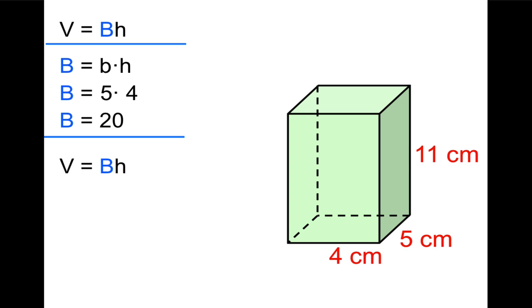Now to find the volume, we're going to plug that 20 in for the big B. And now when we say times h, we mean the height of the prism, which is 11. So we're going to have 20 times 11, 220 centimeters cubed.